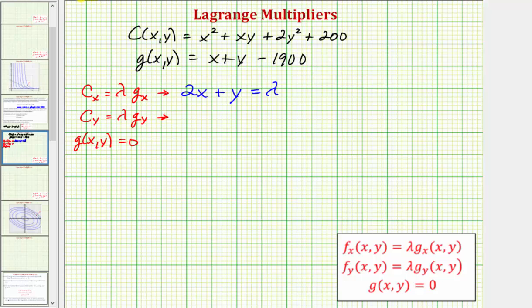For our second equation, we have the partial of C with respect to y, which would be x plus 4y equals lambda times the partial of g with respect to y, which would also be 1. And our last equation is g(x,y) equals 0, which would be x plus y minus 1,900 equals 0.